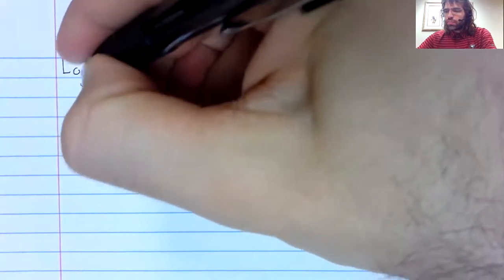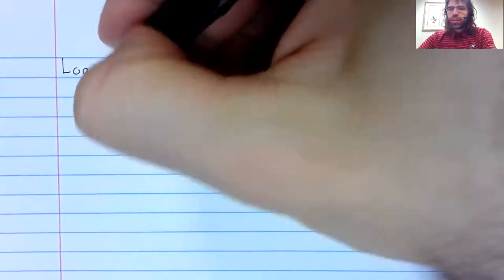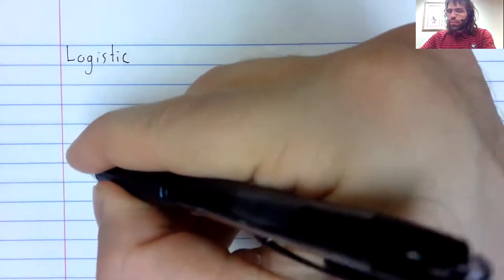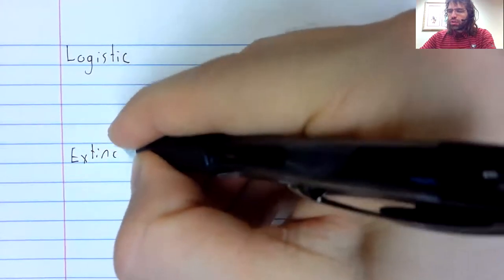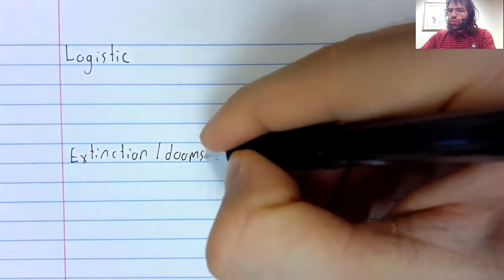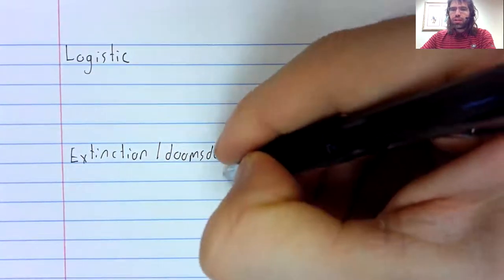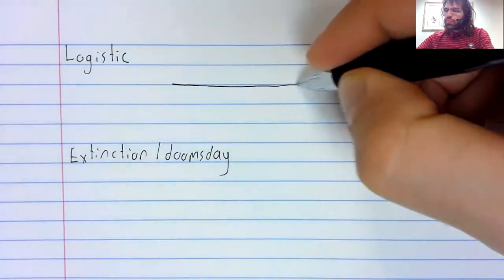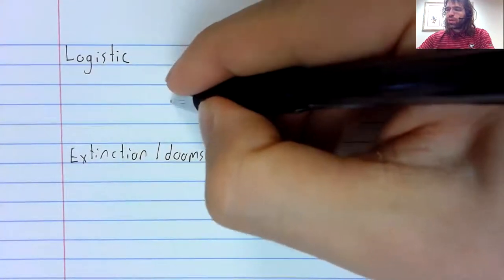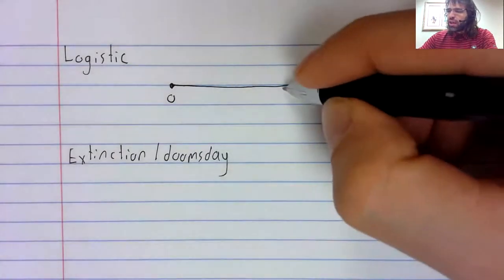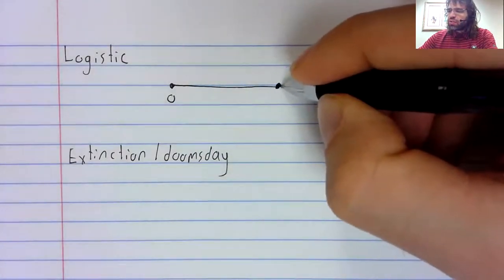In section 2.1, we looked at a logistic model and we looked at what we called the extinction doomsday model. Both of these models had a fixed point that is zero, representing extinction, and then another fixed point.